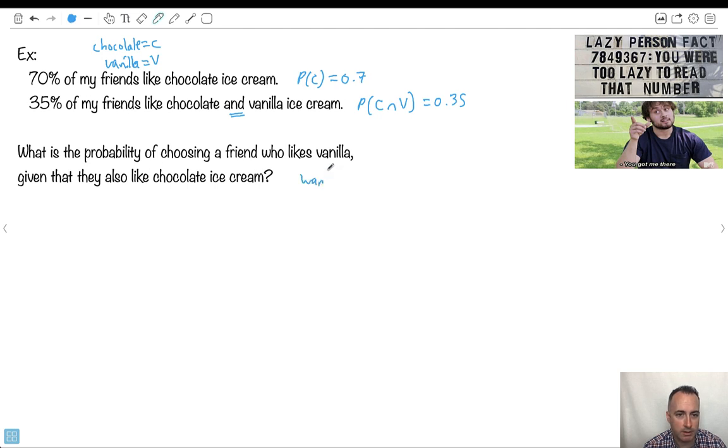We want, what do we want? We want probability of choosing a friend who likes vanilla. So I want probability of vanilla given, oh, that means I do this, given that they also like chocolate. Do you see what I'm doing? I want this, probability of vanilla given chocolate. Well, I'm going to use that formula. So let's use it.